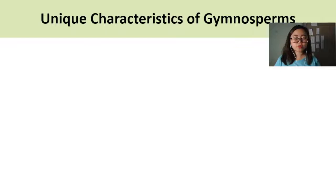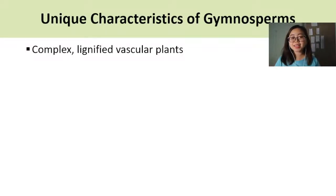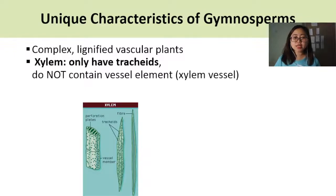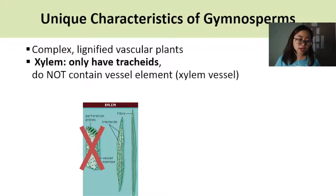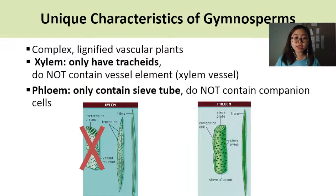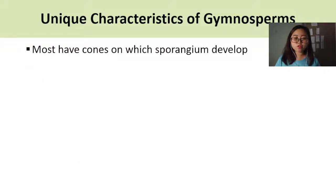Another unique characteristic of gymnosperms is that they are complex and lignified vascular plants. Being vascular plants means they have xylem and phloem, but there is something different: the xylem in gymnosperms only has tracheids — they do not contain vessel elements. Whereas the phloem of gymnosperms only contains sieve tubes and does not contain companion cells.